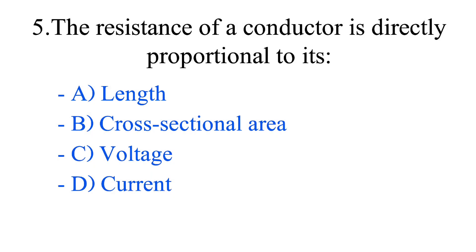Question number 5. The resistance of a conductor is directly proportional to its: option A, length; option B, cross-sectional area; option C, voltage; option D, current. The correct answer is option A, length.